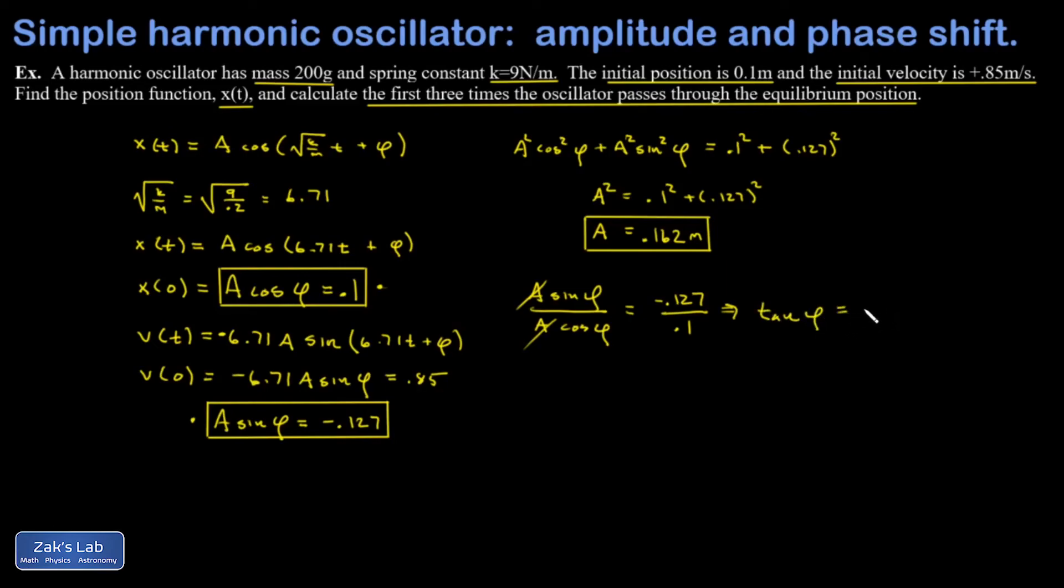On the right-hand side, I get negative 1.27. Make sure you are set in radians for this. And I get negative 0.904.